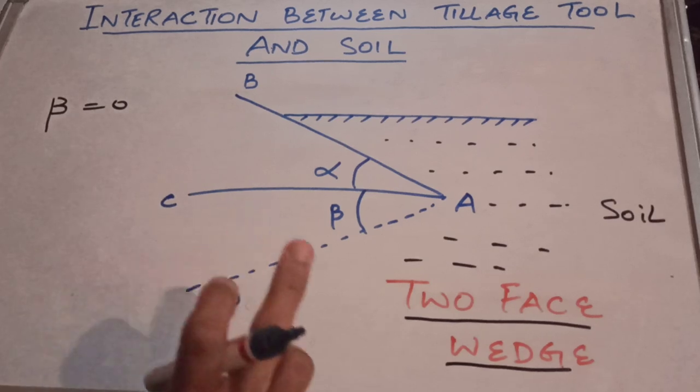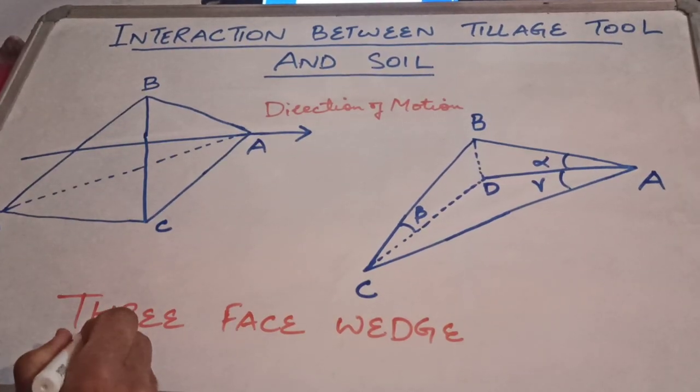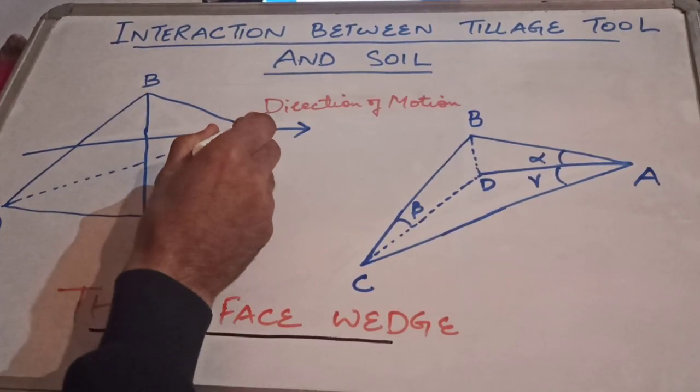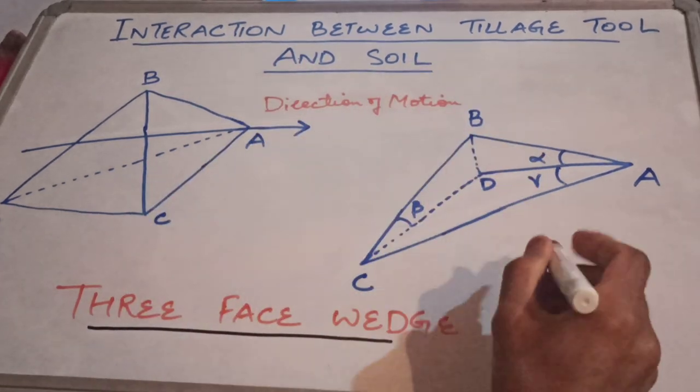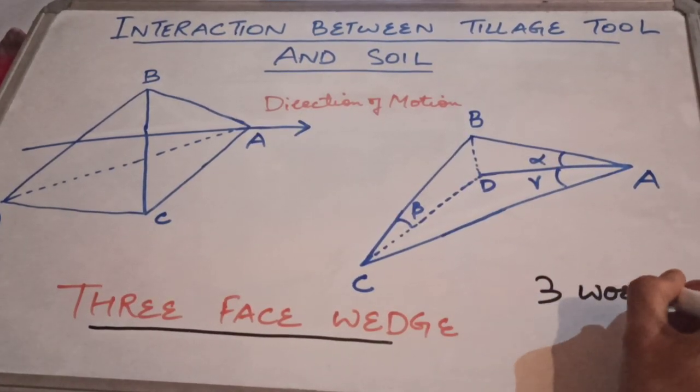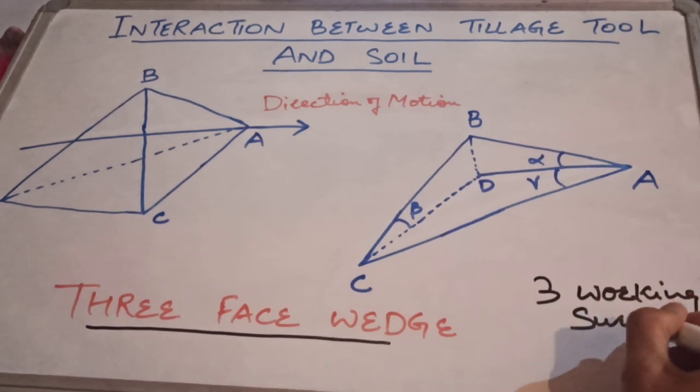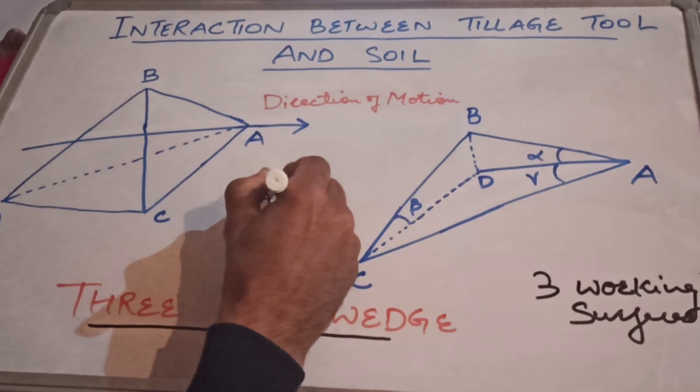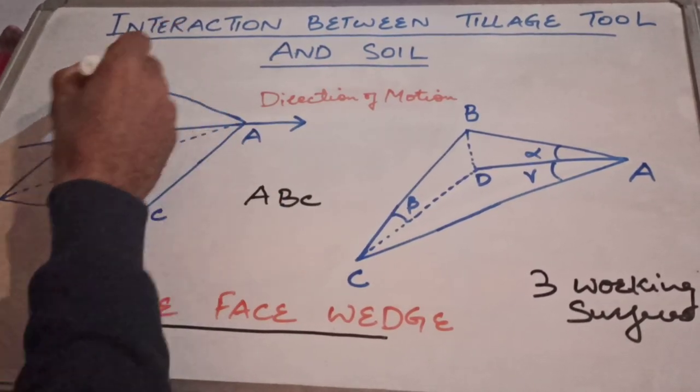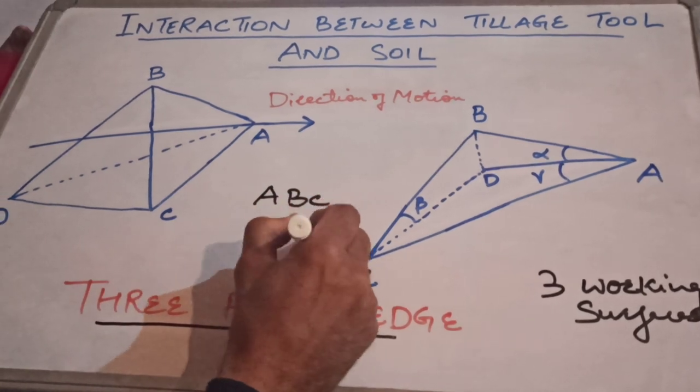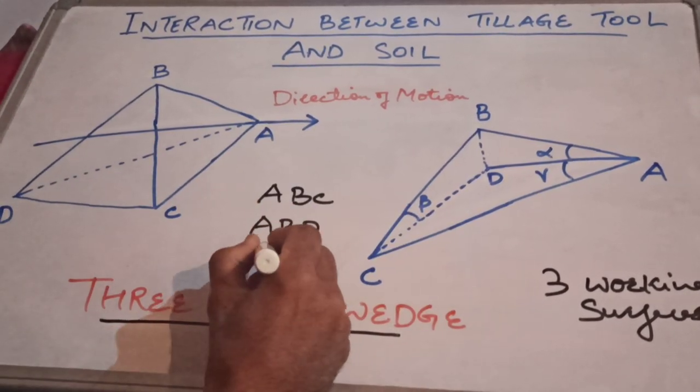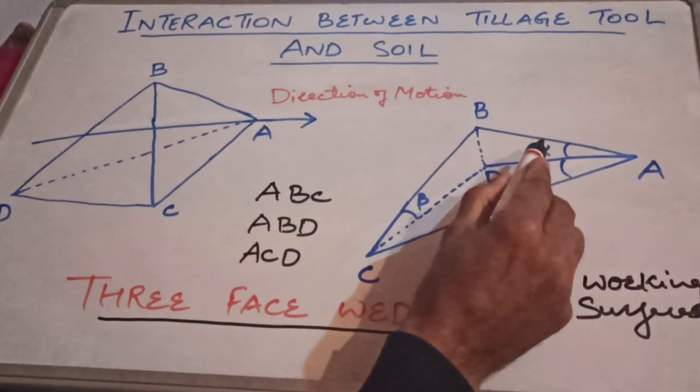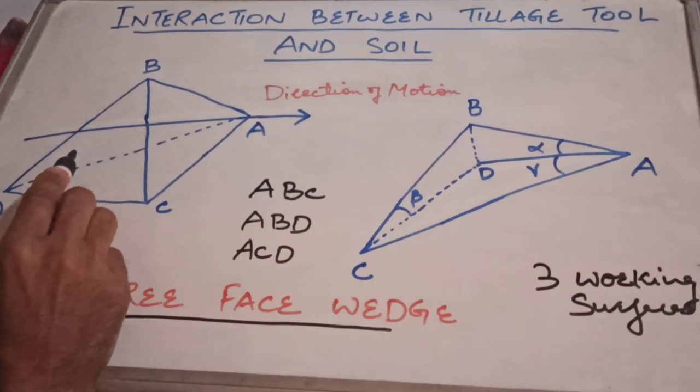This is your three phase wedge. It is actually forming a tetrahedron, that means four sides ABCD. It has three working surfaces. First wedge ABC, second wedge ABD, third surface ACD. They are making angles alpha, gamma and beta.